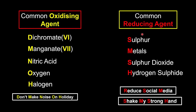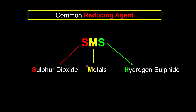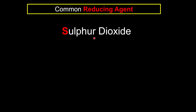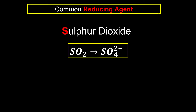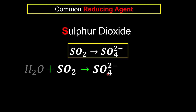Now we're going to look at the reducing agents one by one, starting with sulfur dioxide. Sulfur dioxide has a chemical formula of SO₂. Since reducing agents undergo the process of oxidation, it means they gain more oxygen. So sulfur dioxide will become sulfate ion, which has four oxygens. This is going to be our general idea and we're going to balance off the equation. Right hand side we have more oxygens, so like usual we're going to use water to balance off the oxygens. But the problem is now we have more hydrogen at the left, so we're going to add hydrogen ions to balance off.